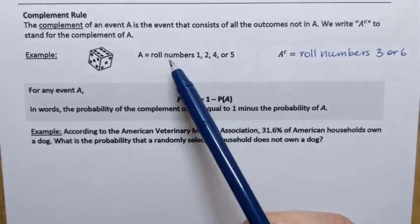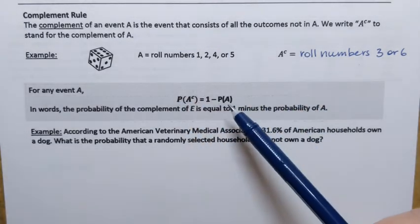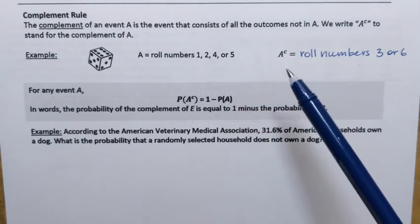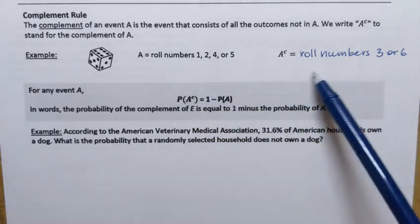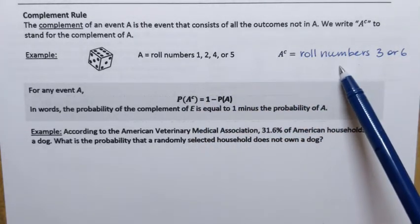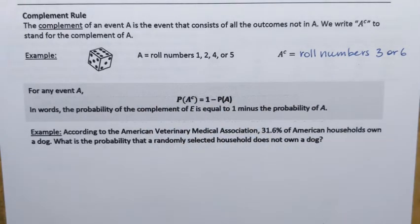You can see together event and its complement make all possible outcomes. And the second note is that they're complements of each other. If I call this an event, then its complement is going to be this one over here. Complements are events, they're complements of each other.